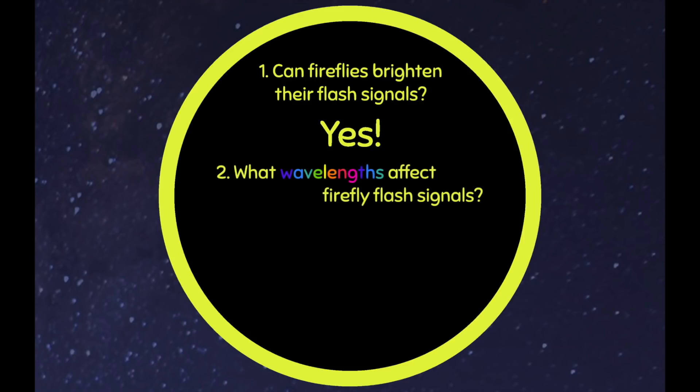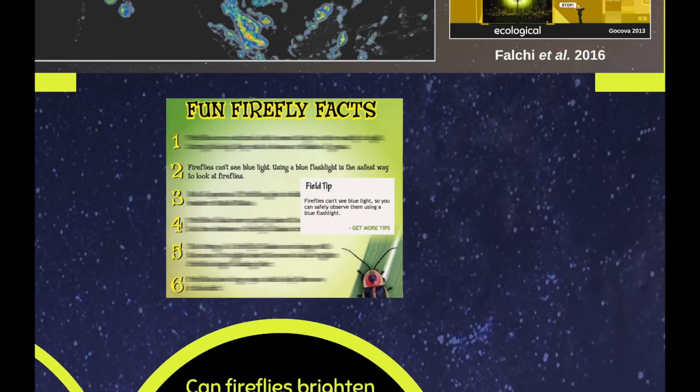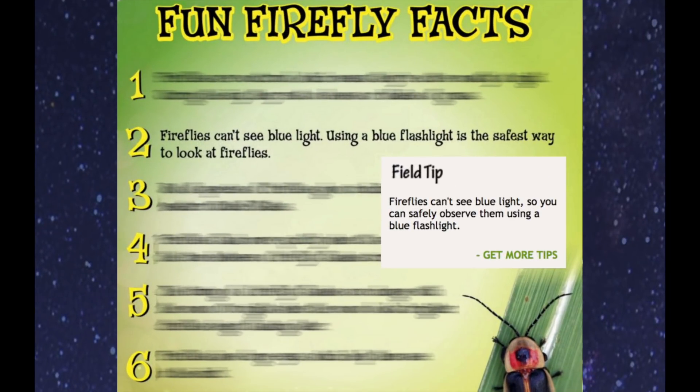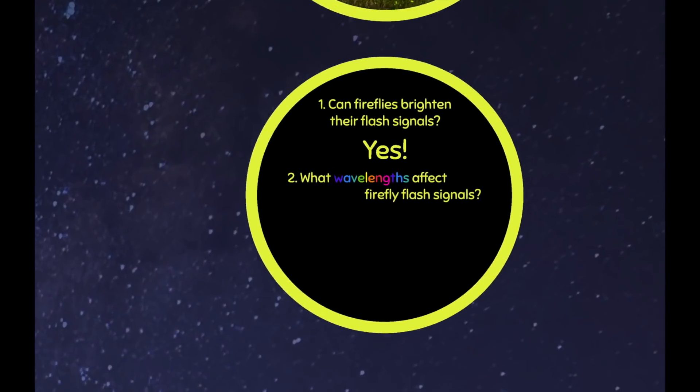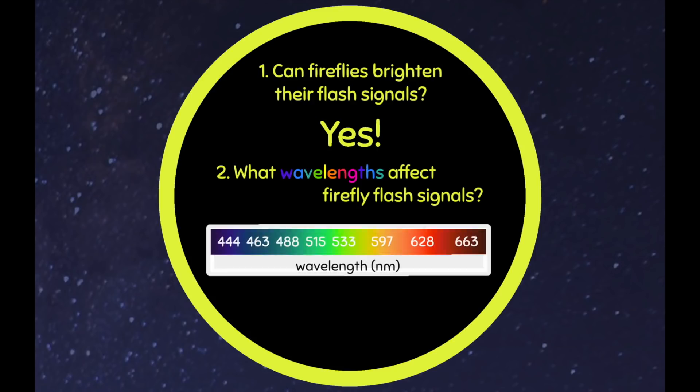Two, what wavelengths affect firefly flash signals? So remember, we were kind of curious about this, right? Because in America, people say fireflies can't see blue. In Asia, people say fireflies can't see red. Well, at least for Aquatica ficta, which is an Asian firefly, it really seems like blue light is not so good for them. They really do care about that. It makes them flash more brightly, but not as much. Meanwhile, yellow, orange, or red light don't really have an effect.